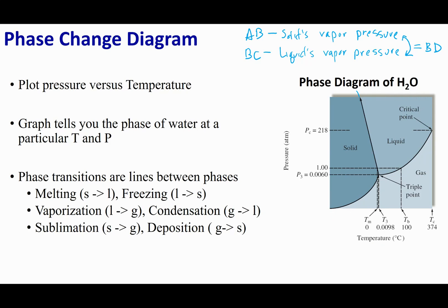Now that we've covered how this phase diagram is constructed, let's see why it's useful. This diagram tells us the thermodynamically most stable phase given a pressure and a temperature. For example, if I were to give you a specific point on this graph, it would tell me that the solid phase is the most thermodynamically favorable at that pressure and temperature.